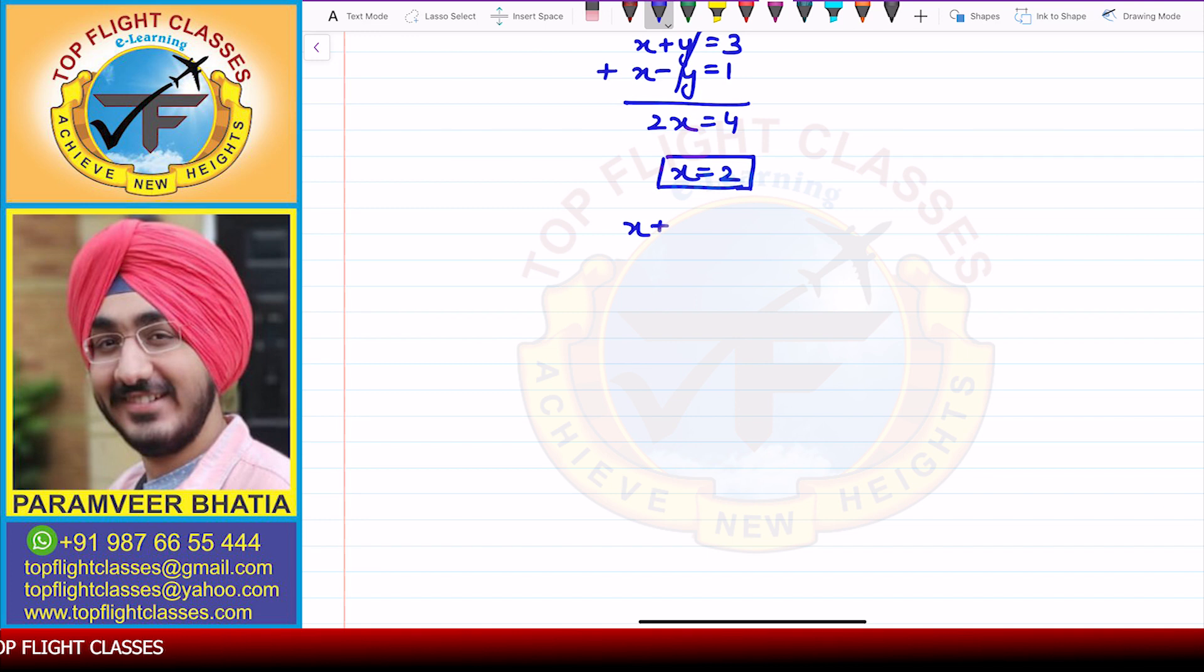Now let's put it in any equation, like x + y = 3. So here you have 2 + y = 3, so y's value is 1. So x is 2, y is 1.